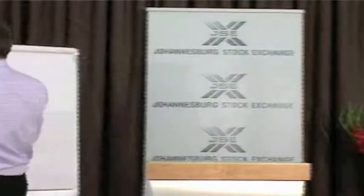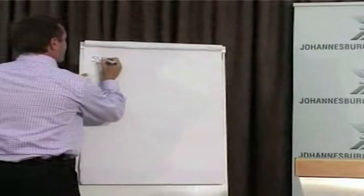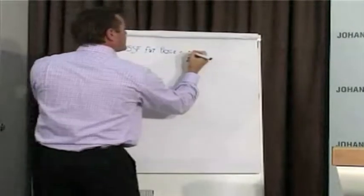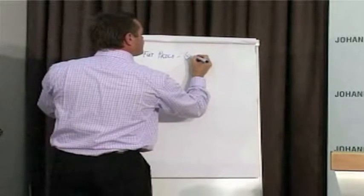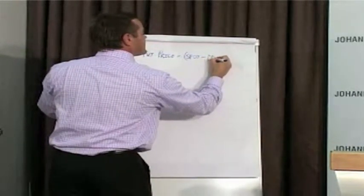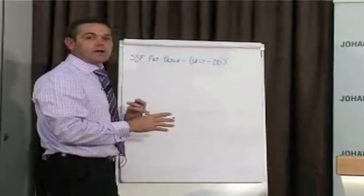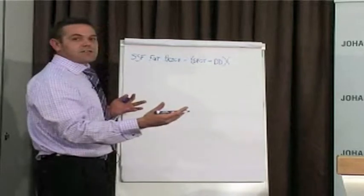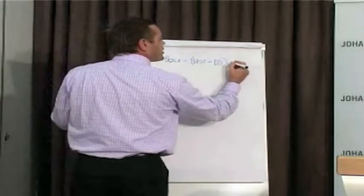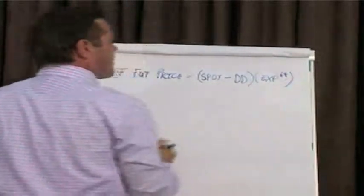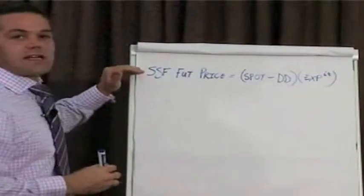The international formula for calculating a Single Stock Futures price is calculated by taking the spot price minus the discounted dividend, multiplied by interest. Interest could be calculated differently — it could be compounded interest or simple interest. The way I'm going to explain today is normal compounded interest, so it would be exponential to the power of interest multiplied by time. That is the international standard for calculating a futures price.